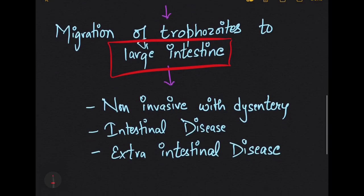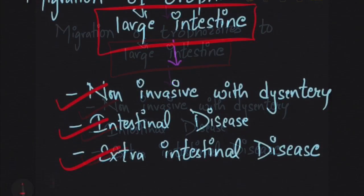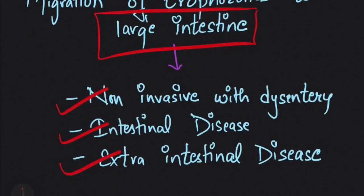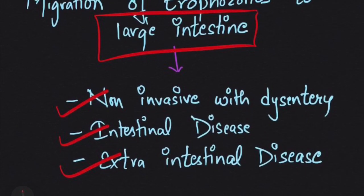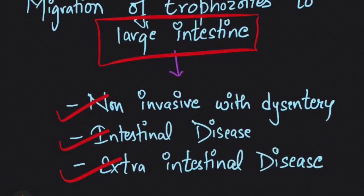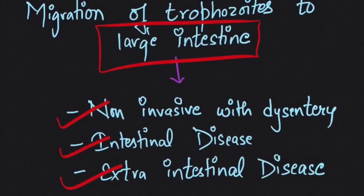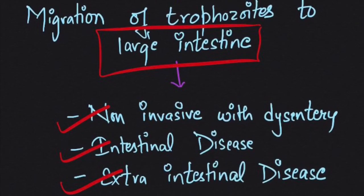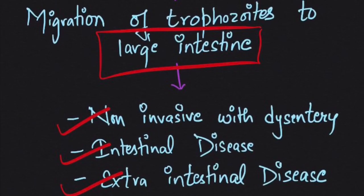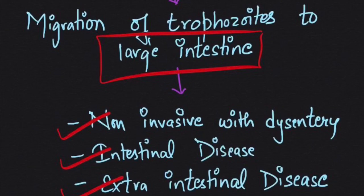This finally leads to clinical conditions including non-invasive disease, intestinal disease such as ulcers, and extra-intestinal disease. Extra-intestinal manifestations are related to liver abscess, brain, and lungs, and can cause significant pathological manifestations.